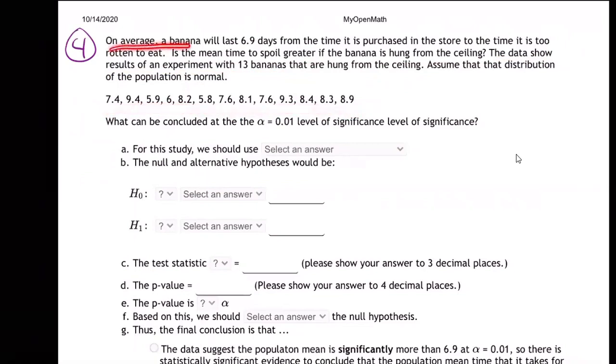There's the 13 bananas and how long it took them to spoil. So remember, on average, bananas take 6.9 days to spoil. They hung these 13 bananas from the ceiling. One of them took 7.4 days to spoil. The other took 9.4, 5.9, 6, 8.2, 5.8, 7, 7.6, et cetera. These are the 13 bananas right here.